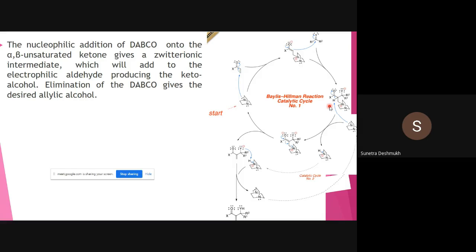Now we have generated a negative charge on the oxygen atom and the positive charge is still on DABCO. We want to eliminate this proton, and that proton is abstracted by DABCO again. DABCO's role here is abstraction of this proton and regeneration of the negative charge on the oxygen atom. In this way we generate two negative charges, and by abstraction of the proton, we get protonated DABCO.